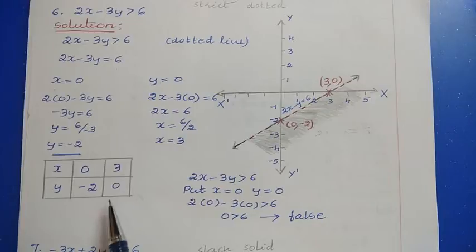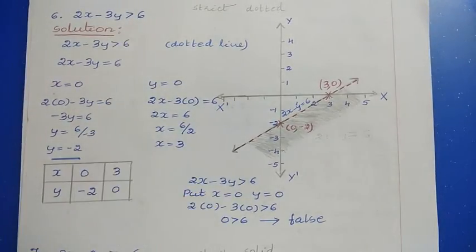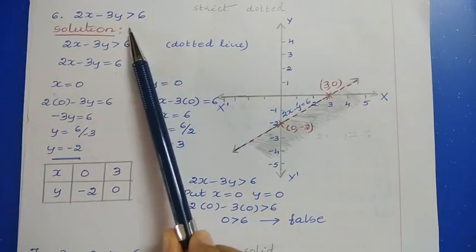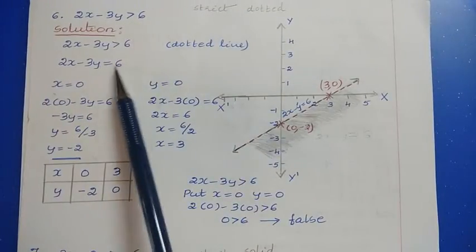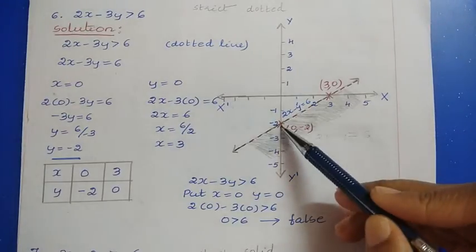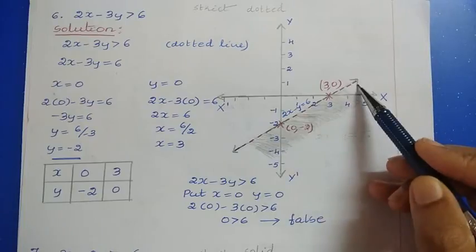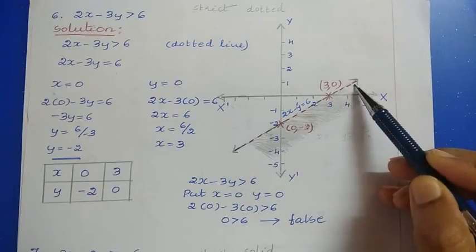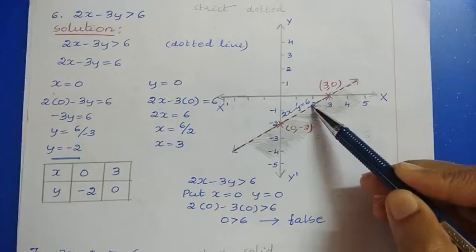To draw the graph, check the inequality type. Here we have strictly greater than — a strict inequality — so we use a dotted line because the equality statement 2x minus 3y equals 6 is not included. Locate the points (0, -2) and (3, 0) and draw a dotted straight line. Now we have to shade the area for the inequality.